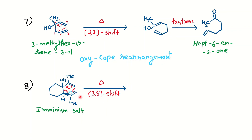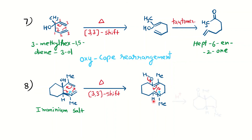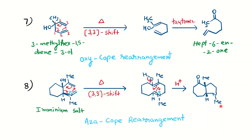Similarly, if in the 1,5-diene system a nitrogen is present in the form of an iminium salt under thermal condition, a sigmatropic rearrangement will occur and this will be called aza-cope rearrangement. You can see now we have a new sigma bond followed by the pi bond rearrangement. The OH group is in the enolic form, and under acidic condition you will get the more stable product. The mechanism is the same in all these reactions.